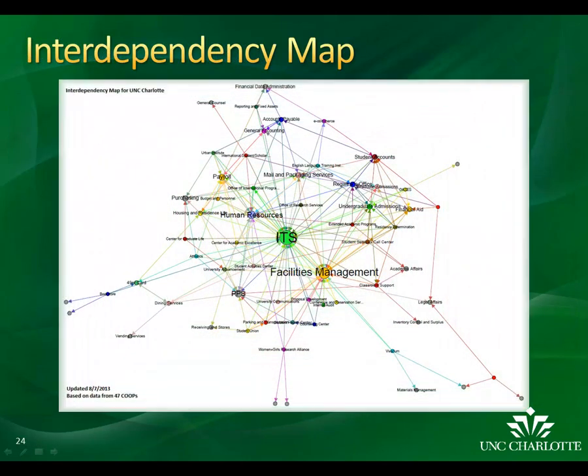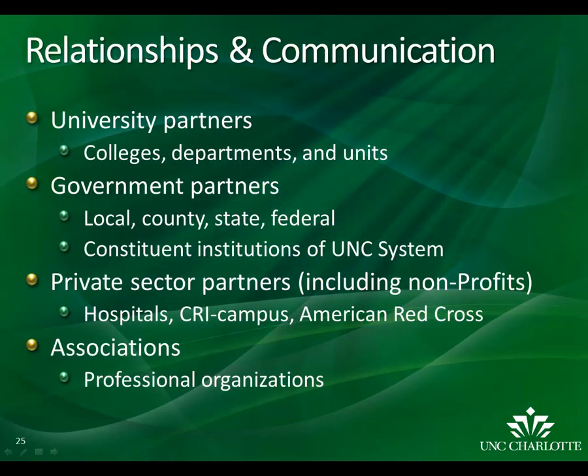This interdependency map shows the interdependencies for business units with completed COOPs at UNC Charlotte. This information is captured by the COOP and analyzed by the Office of Business Continuity Planning using visual analytics software. Figuring out which departments on campus you depend on to deliver mission essential services will help you plan for disruptions to your operations. At the department level, cultivating relationships and keeping open lines of communication within UNC Charlotte and outside stakeholders is crucial. This can help you secure alternate locations if necessary. The Department of Risk Management Safety and Security collaborates with local, state, and federal governments as well as private sector partners and professional associations to assist with the planning and reception of services.